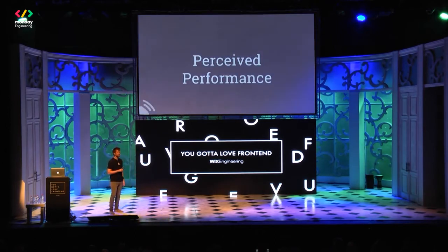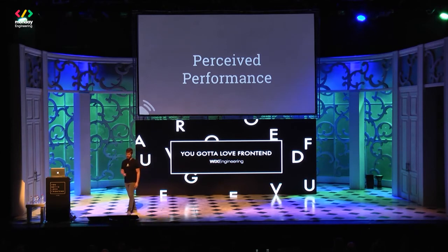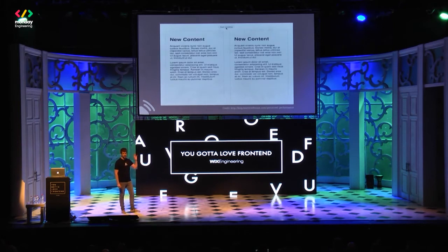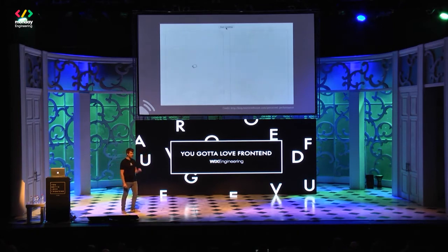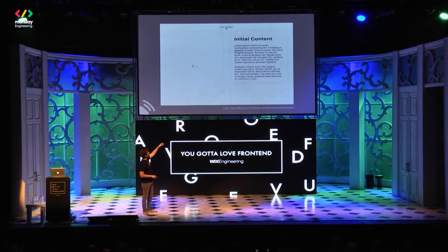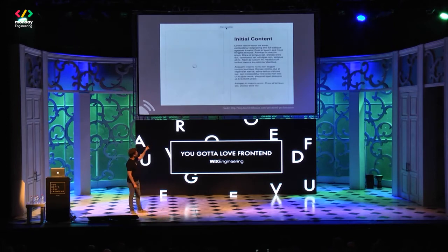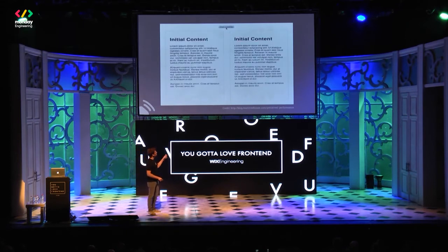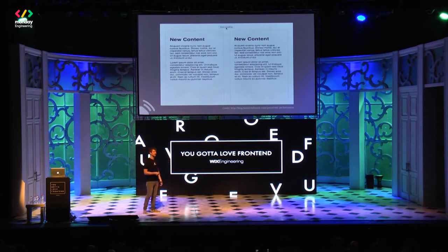Another way to achieve performance is perceived performance. Sometimes you just can't improve your server performance or rendering, and you can use perceived performance to fake it. Here's an example: two animations that take exactly the same amount of time. The right-hand side feels much faster. As a user, on the right side I click a button, I see a nice animation, and the new content appears instantly. On the left side I click a button, I see a loading indicator — I know in my mind I'm waiting — and then new content appears. This is one way you can use animation to make your product feel faster.